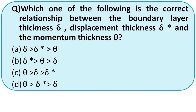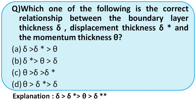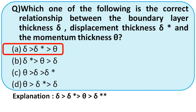Which is the correct relationship between laminar boundary layer thickness, displacement thickness, and momentum thickness? The correct order is: δ > δ* > θ (momentum) > energy thickness. So the right option is option E.